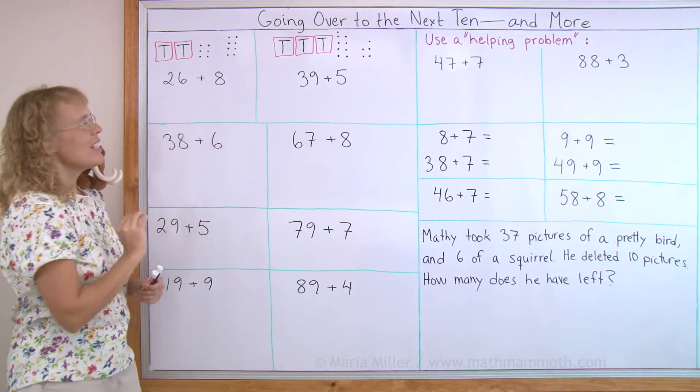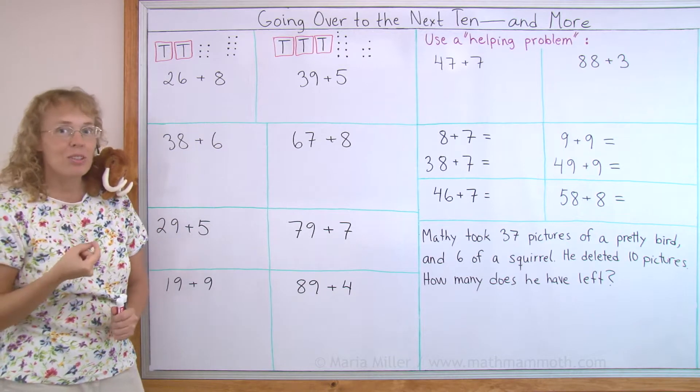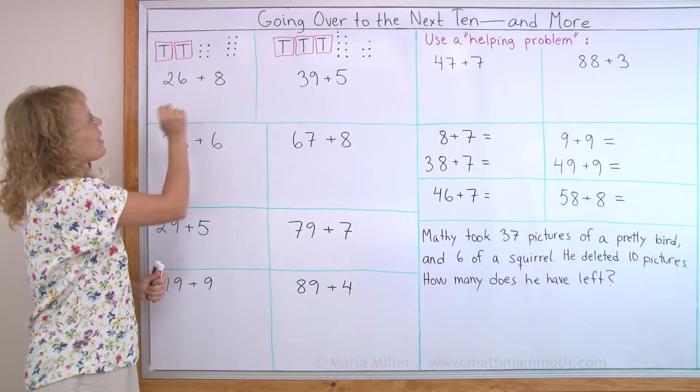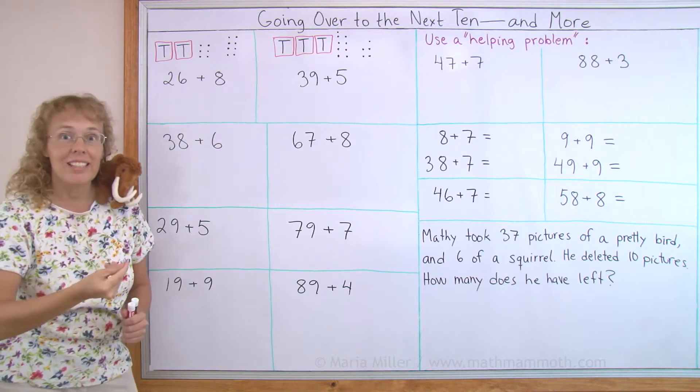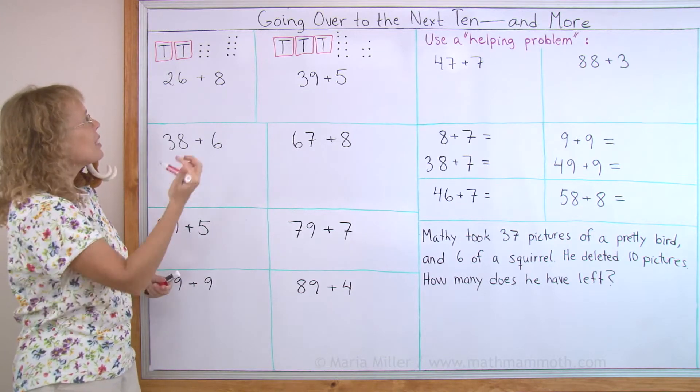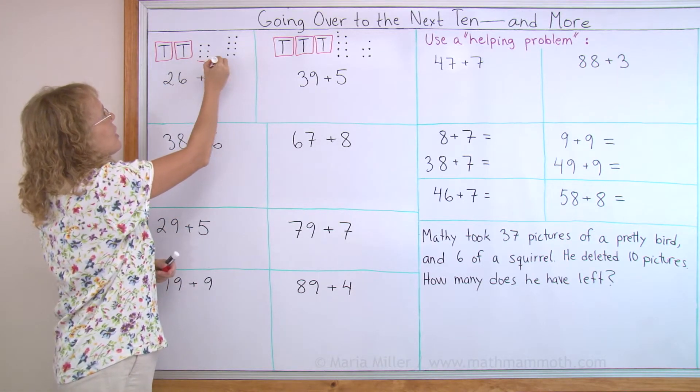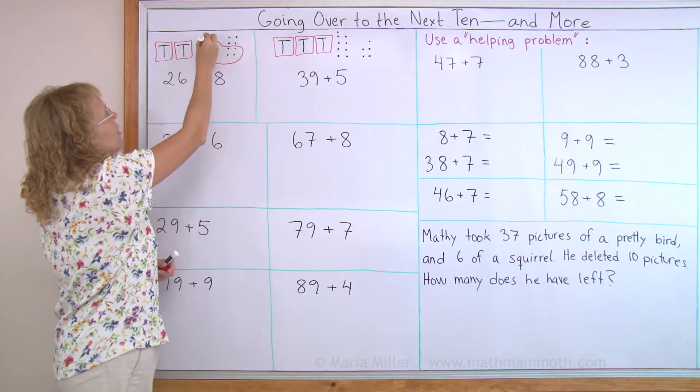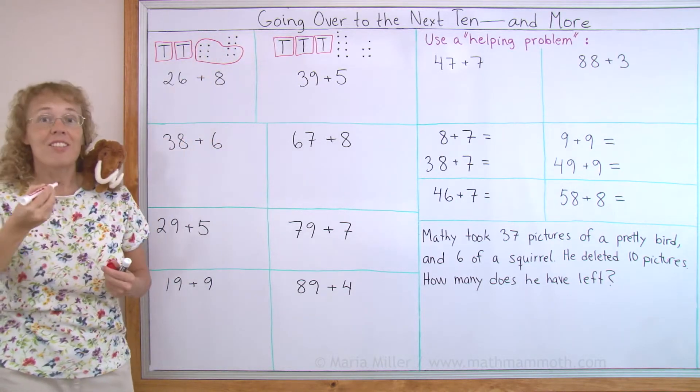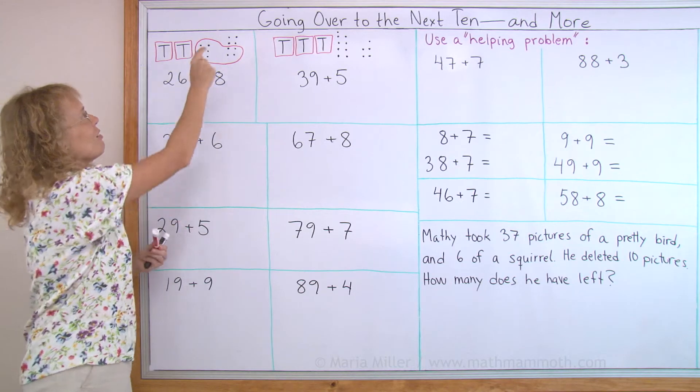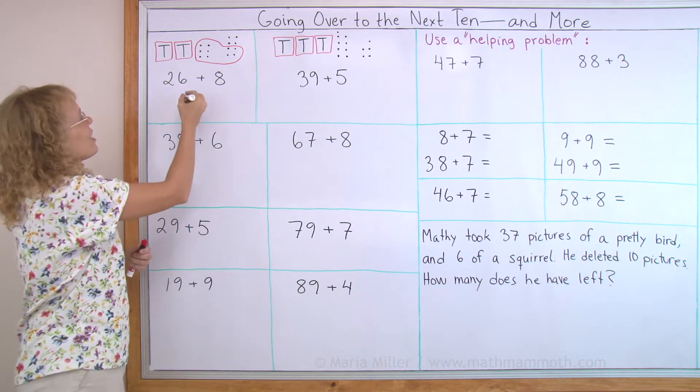26 plus 8. Now you know that you can start out by thinking of 6 plus 8 here. But that is more than 10, right? So we see it in the picture that I can form a new 10 from the 6 and from the 4 over here. So now I have three 10s and then four dots. So the answer is 34.